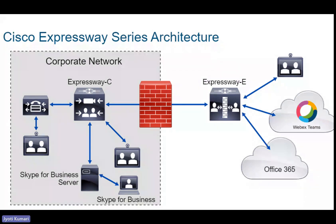Expressway C is deployed inside the corporate network and provides collaboration services to SIP and H.323 compliant endpoints. It supports calls between SIP to SIP devices, H.323 to H.323, and between SIP and H.323. There is a special interworking feature supported on Expressway, and it acts as a communication gateway between these endpoints for CUCM.